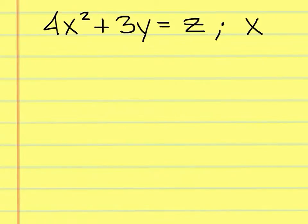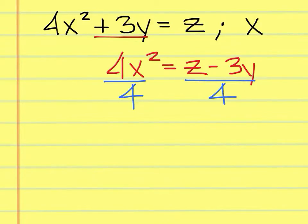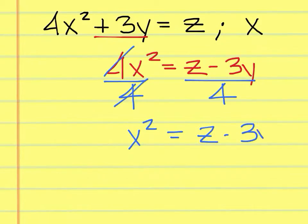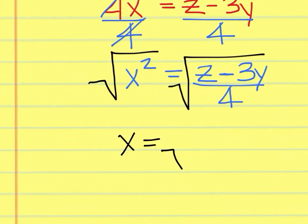To get x by itself, we have to undo everything around it. The first thing is the plus 3y — we're going to move that to the other side and make it minus 3y. We have multiplication next by 4, so we must undo that. That cancels and we have x squared equals z minus 3y over 4. Next, we have to get rid of the exponent by taking the square root of both sides, leaving us with x equals the square root of z minus 3y over 4.